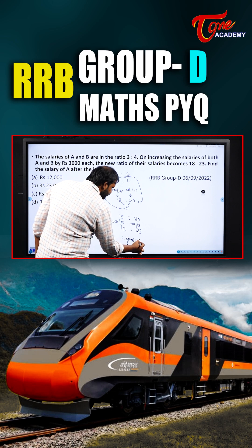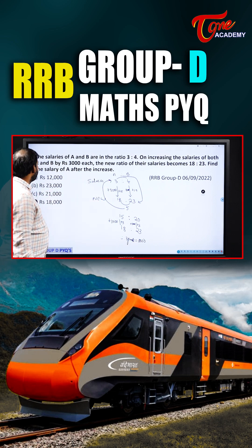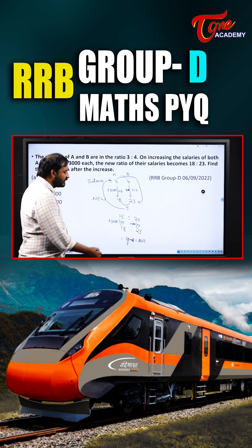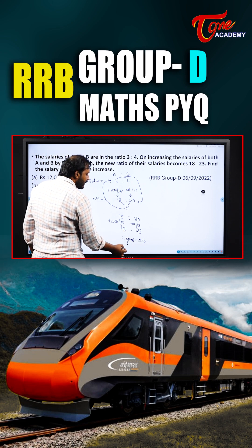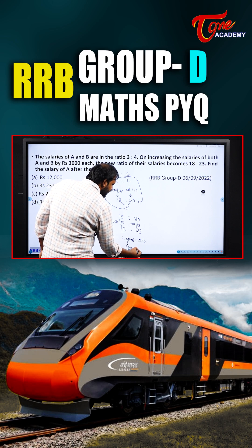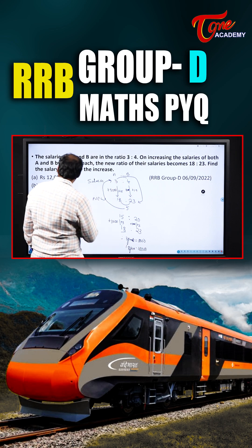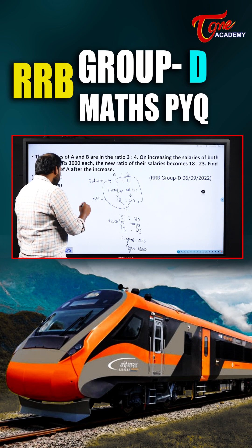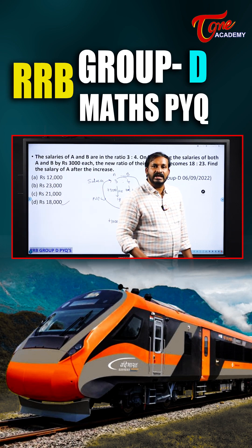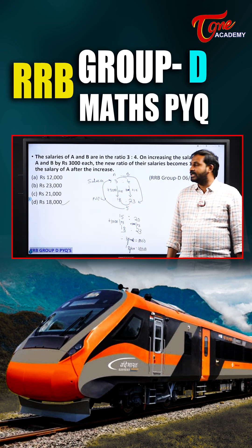They are asking us to find the salary of A after the increase. After the increase, the salary of A is 18 parts. So 18 parts will become 18,000. If 3 parts is 3000, then 18 parts becomes 18,000.